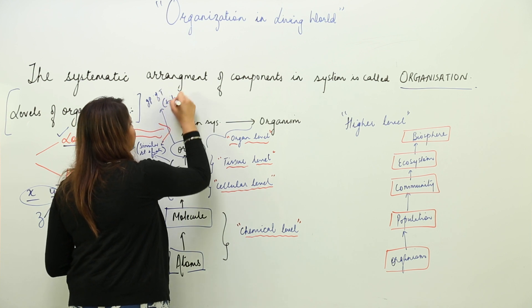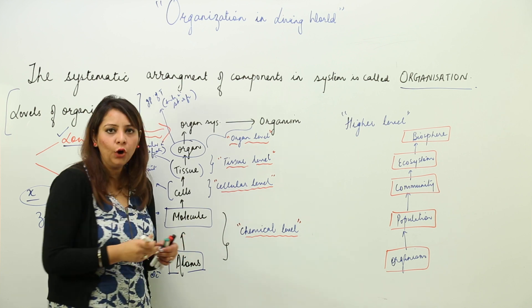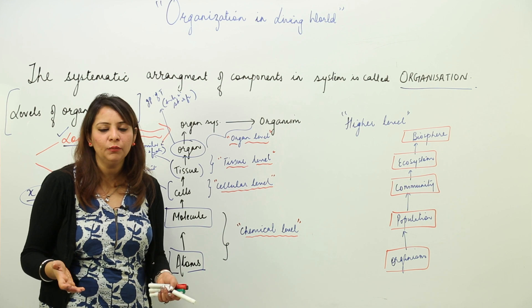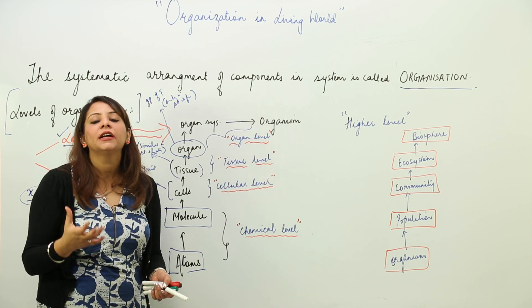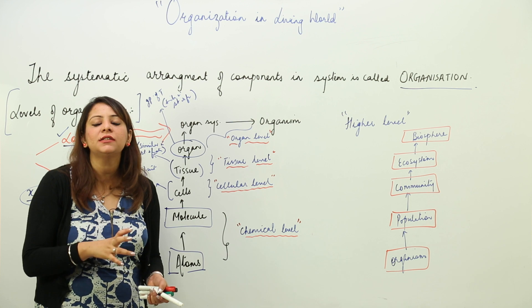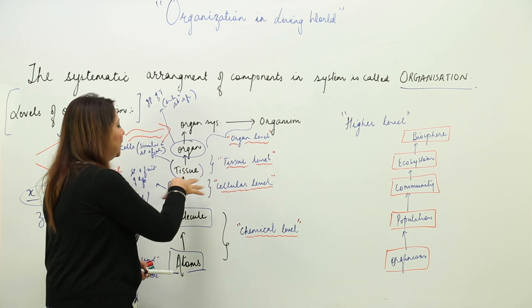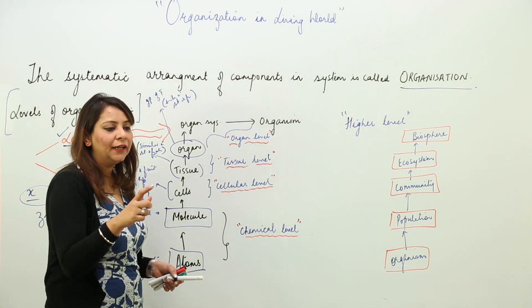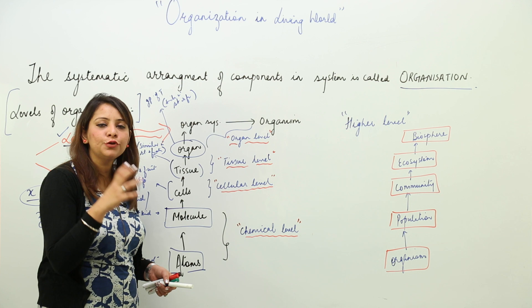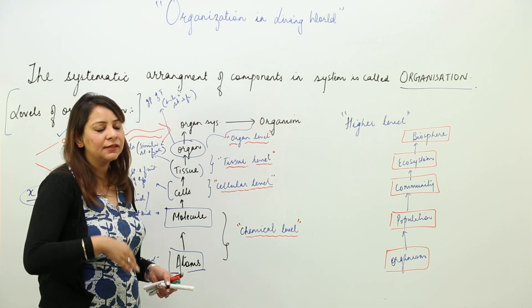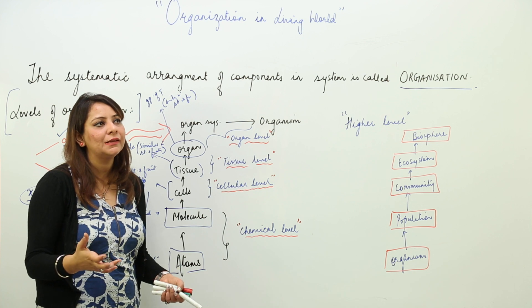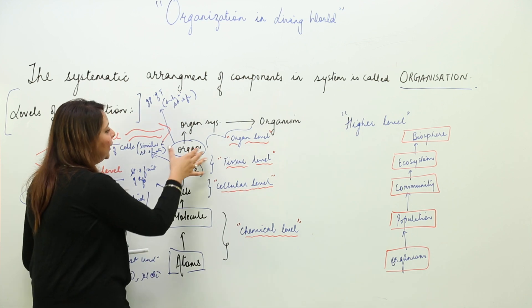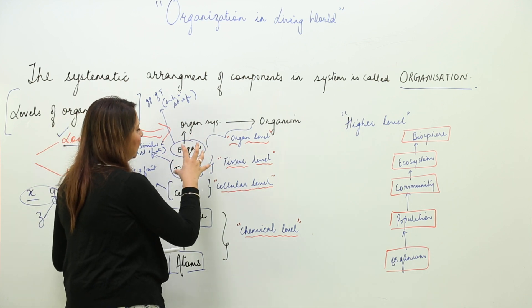An organ is formed by a group of tissues similar in structure and function. Examples include the stomach, liver, and lungs. All the tissues in a given organ, like the stomach, are exactly the same, and the tissues in any organ like the lungs have the same properties.